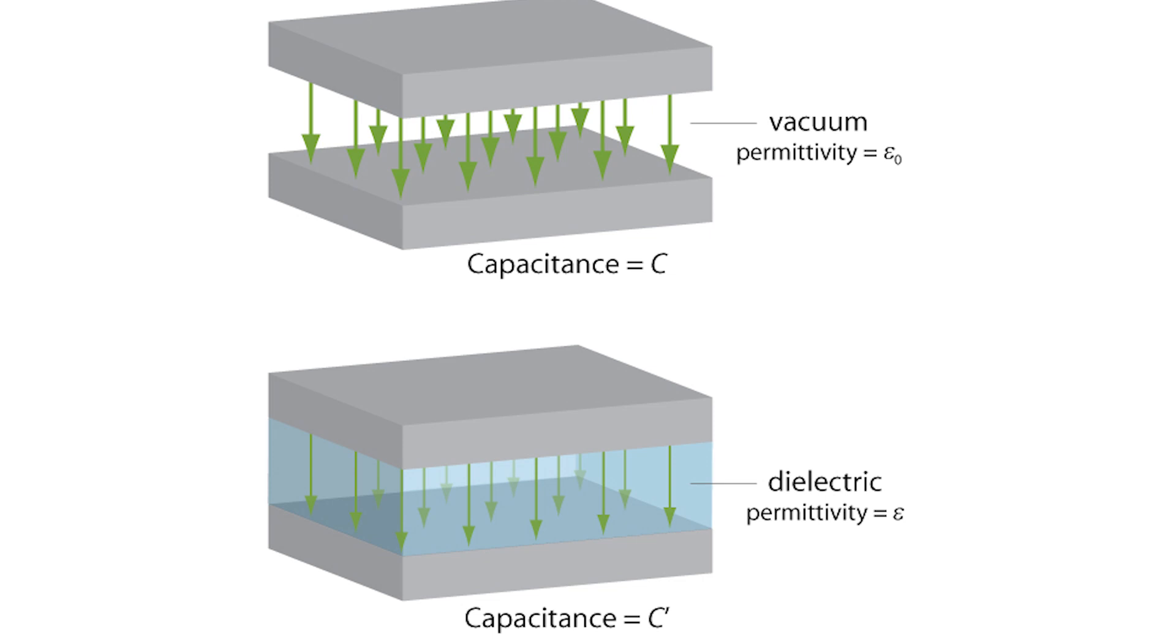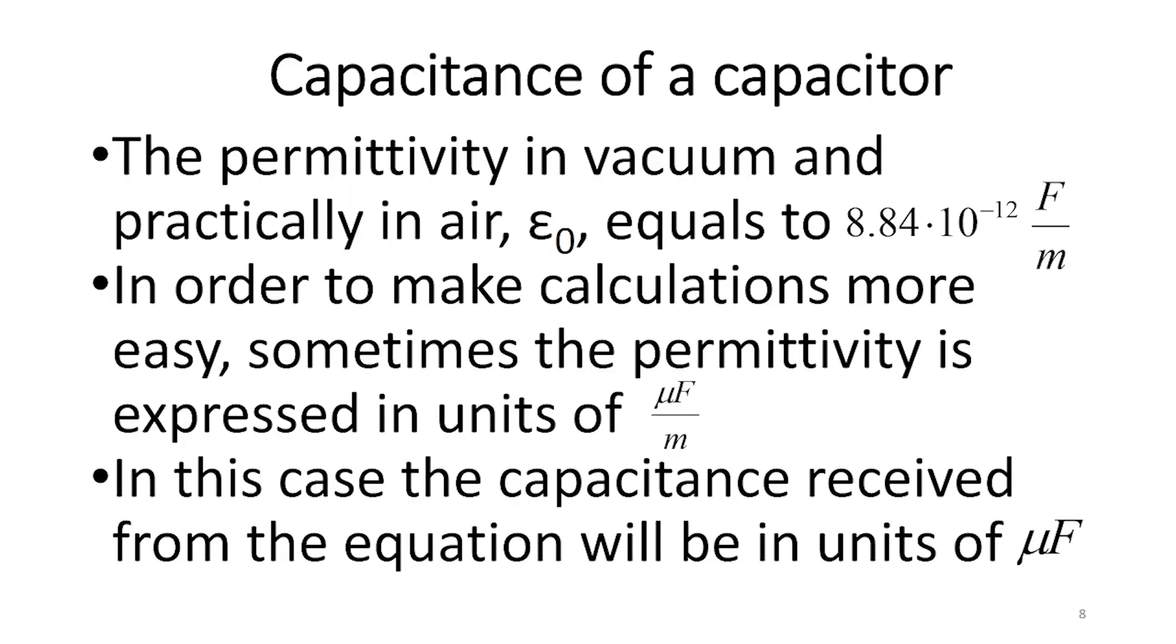Permittivity is the ability of a material to store electric energy in an electric field. The higher the permittivity is, the more energy the material is capable to store. The permittivity in vacuum and practically in air, epsilon zero, equals 8.84 times 10 to the power of minus 12 Farad over meter.